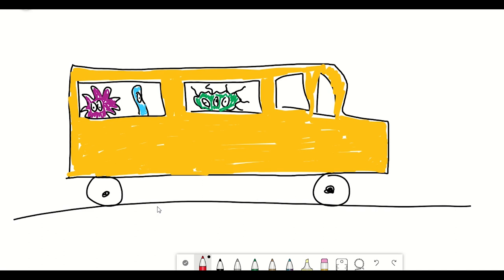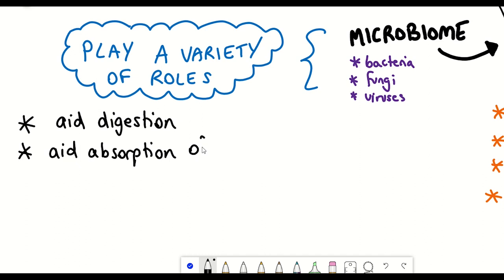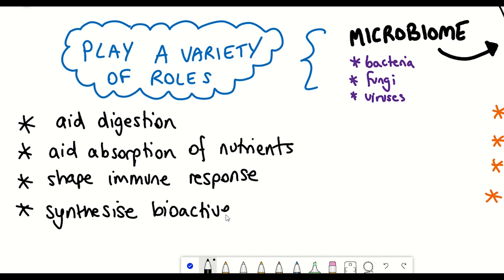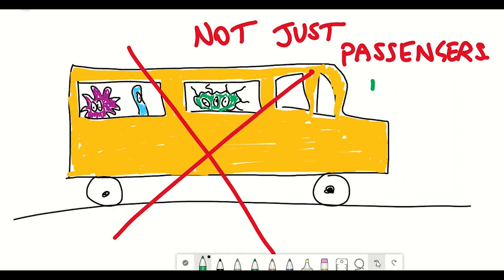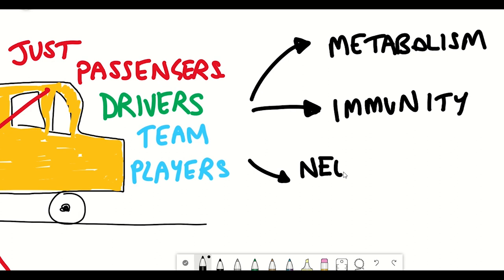You see, the microbiome are not just passengers within our bodies, but they play a variety of functions. They aid in our digestion, they aid absorption of nutrients, they shape our immune response and synthesize their own bioactive compounds, such as short-chain fatty acids. So they're not just passengers, they play critical roles in metabolism, immunity and neurodevelopment, amongst other emerging functions.